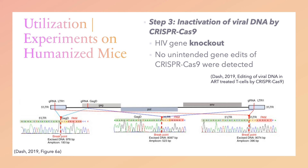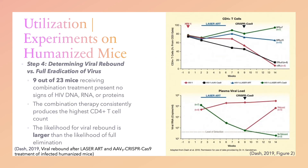In total, the researchers conducted three independent sets of experiments, with each having humanized and HIV-infected mice treated with LASER ART, CRISPR gene editing, and both. Researchers found that across the three experiments, 9 out of 23 mice receiving the combination treatment showed no detectable signs of HIV DNA, RNA, or proteins, indicating that the virus had been completely eradicated in these mice. To confirm that the seemingly virus-free mice indeed carried no more active HIV-1, the team extracted immune cells from some of these animals and transferred them into previously uninfected humanized mice. None of the recipient mice developed HIV infection.